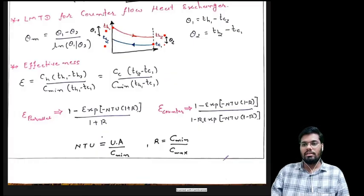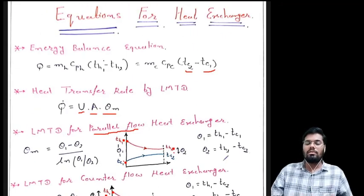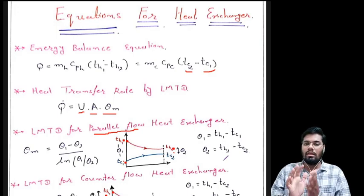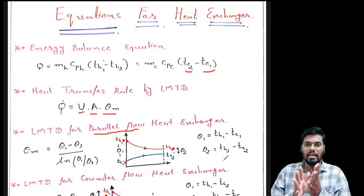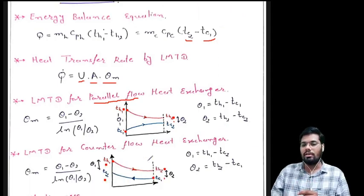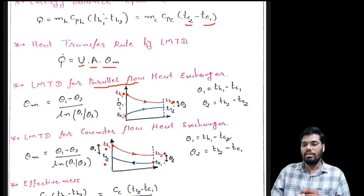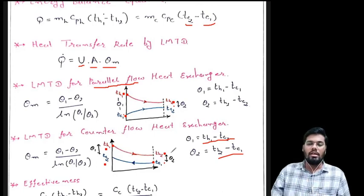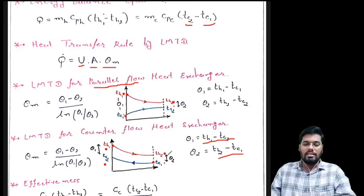These two numericals demonstrate the LMTD method for counter flow heat exchangers. Only three equations are needed: the energy balance equation, the heat transfer rate equation Q = U·A·θm, and the LMTD formula θm = (θ1 - θ2) / ln(θ1/θ2). For counter flow, always use θ1 = TH1 - TC2 and θ2 = TH2 - TC1. Thank you so much.